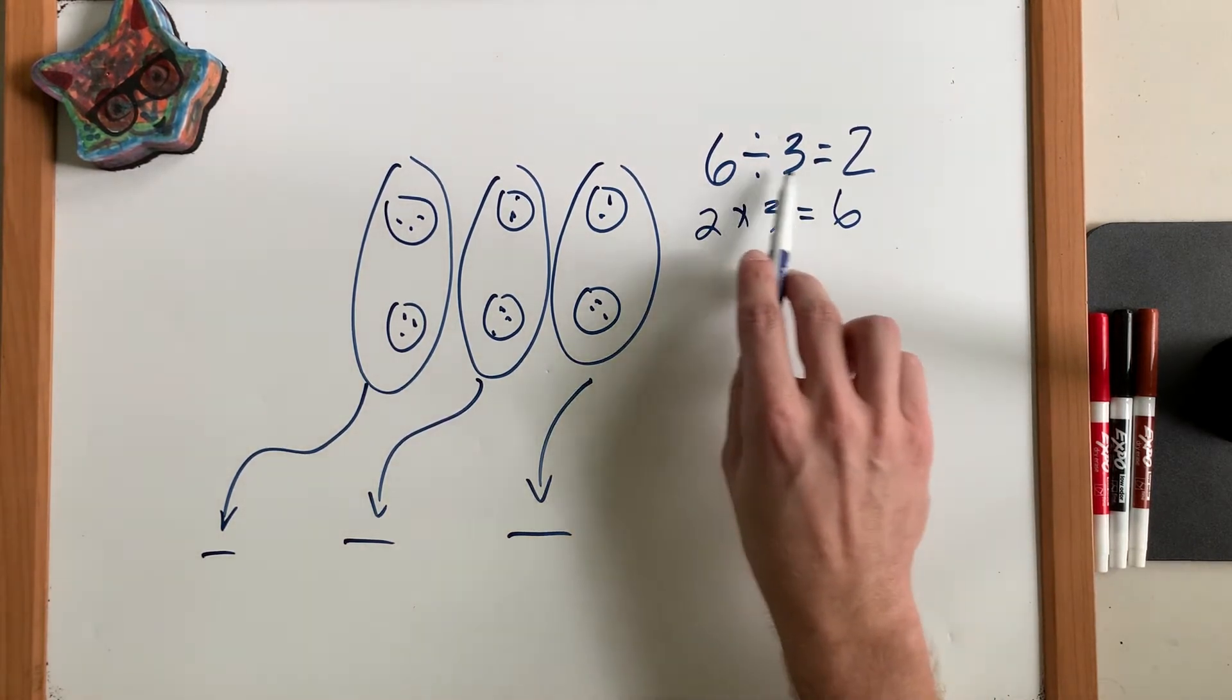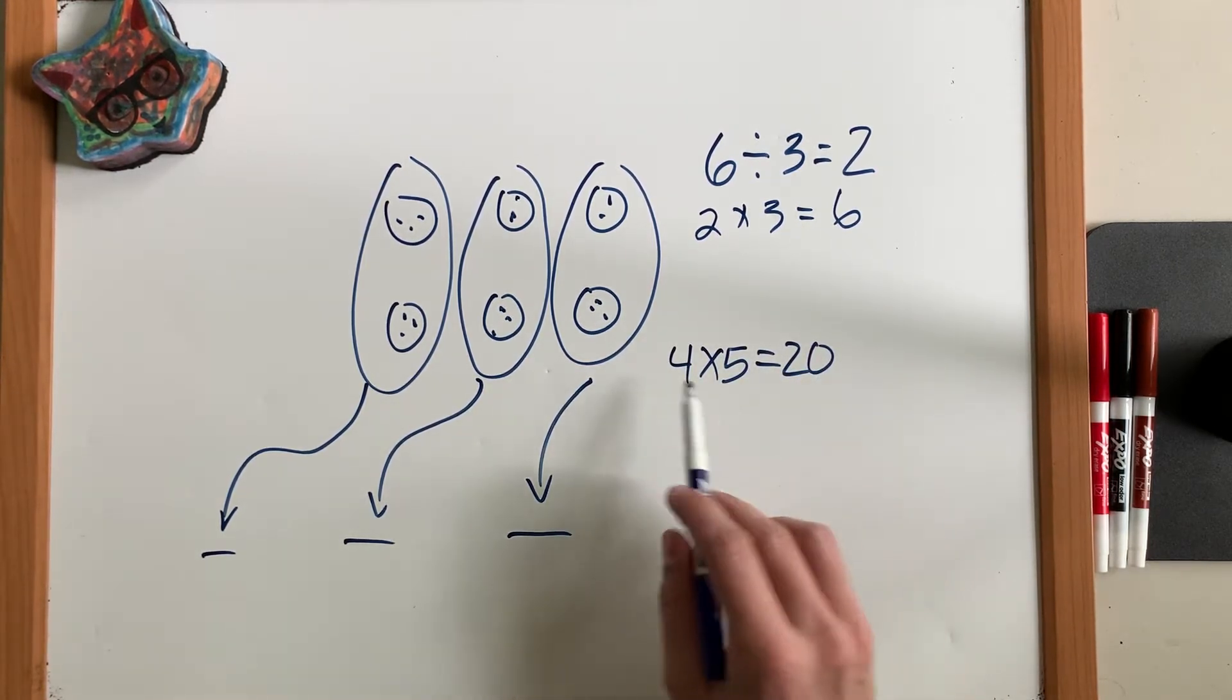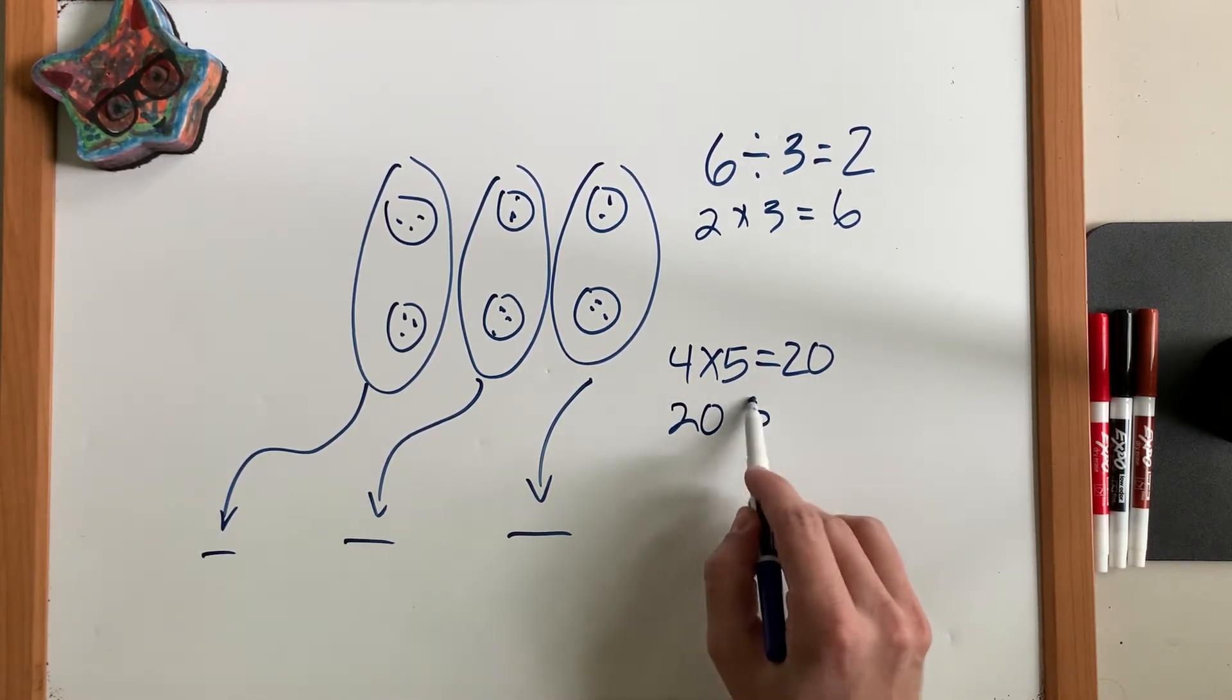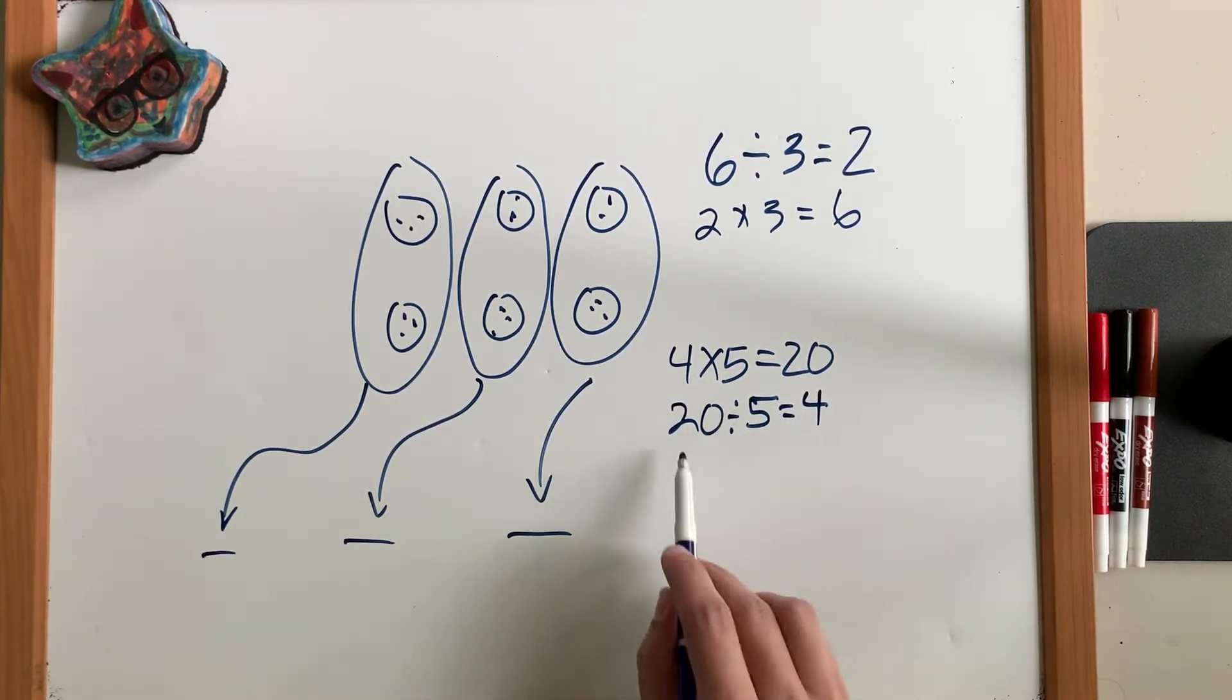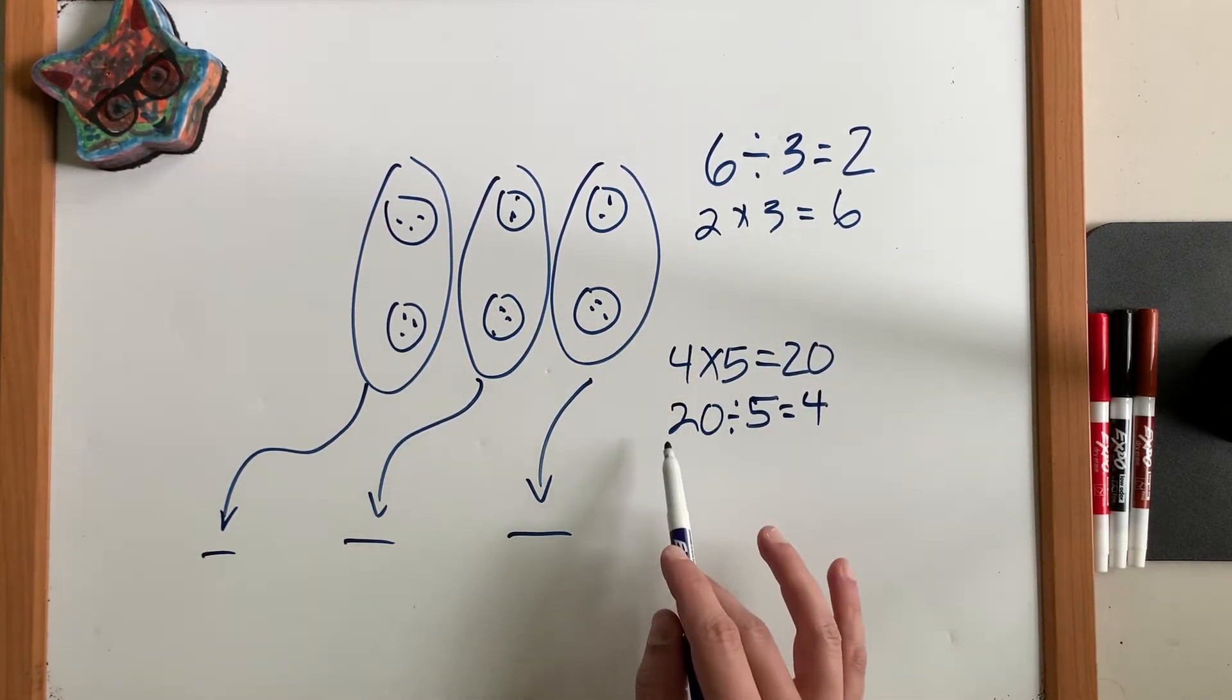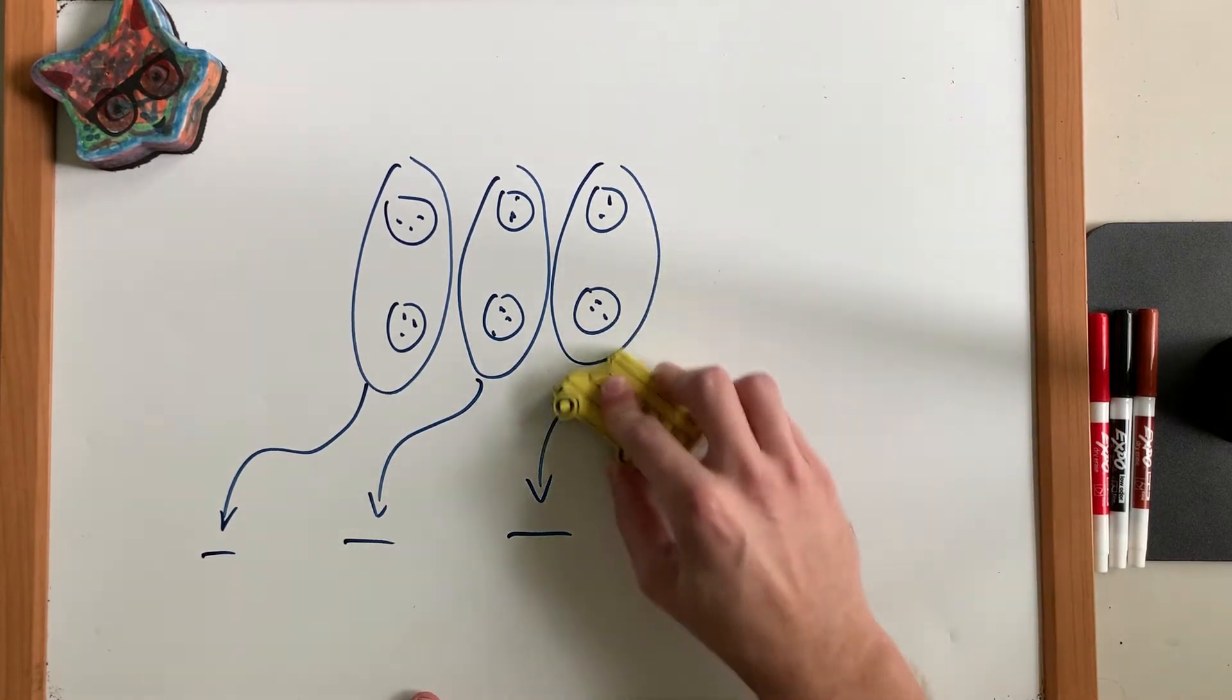So for simple division problems with whole numbers, we can actually see that multiplication knowledge, if you know your times tables, let's go ahead and read this backwards: 20 and then 5 and then 4. Look at this. 20 divided by 5 equals 4. So simple division with whole numbers where you know your times tables, we don't really need long division.